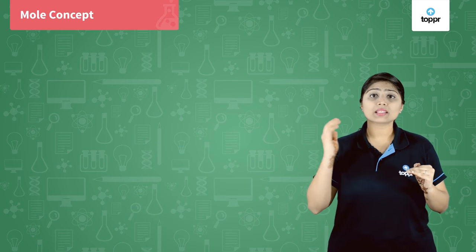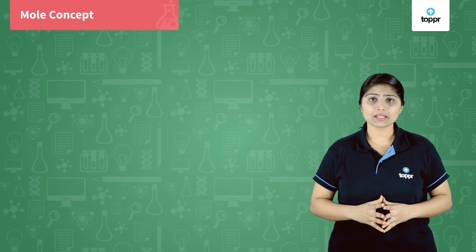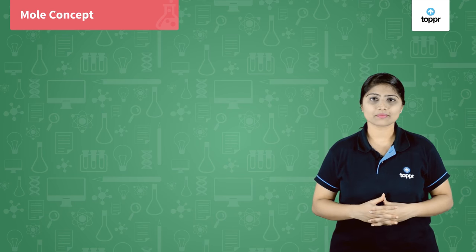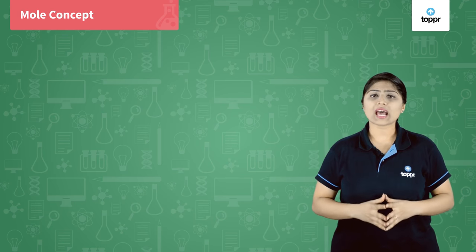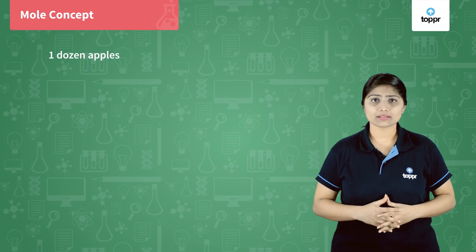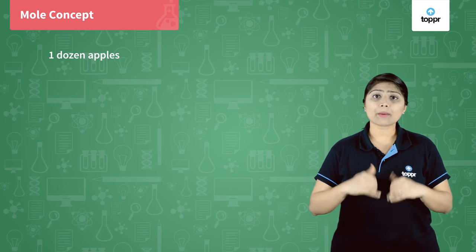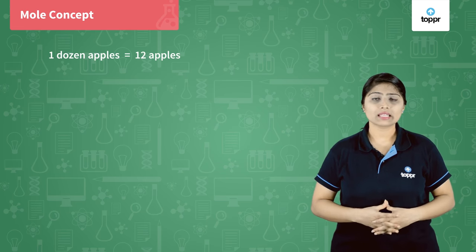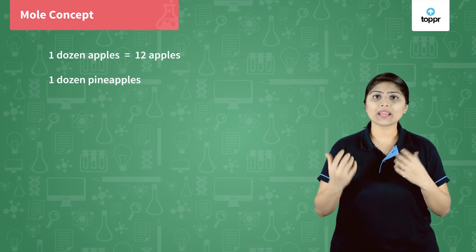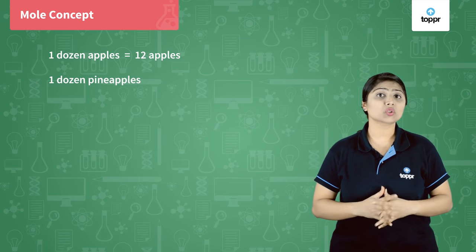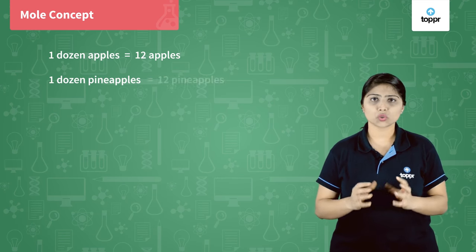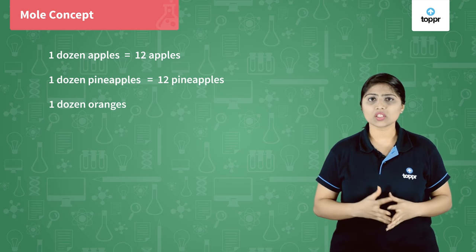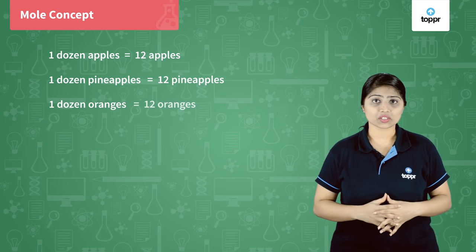To understand the mole concept, let us first understand a very simple example of fruits. Suppose I want one dozen of apples — how many apples should I get? Twelve apples. Suppose if I want one dozen of pineapples, how many pineapples should I get? Twelve pineapples. And if I want one dozen of oranges, I should get twelve oranges.